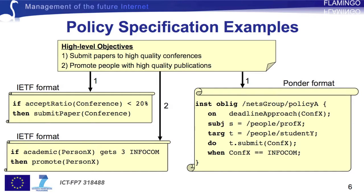This slide provides some example policies that do not relate to networking, for the sake of simplicity and better understanding. Ideally, policies should be specified in the form of high-level objectives that are easy for humans to express. These can subsequently be translated to low-level implementable policies.